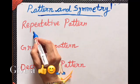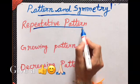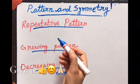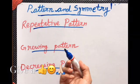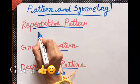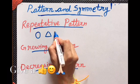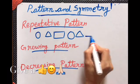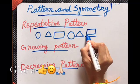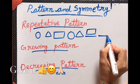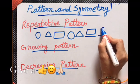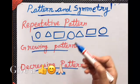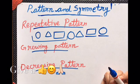Dear students, we have three types of patterns. One is repetitive pattern, growing pattern, and decreasing pattern. Repetitive in which some pattern is repeated again and again. Like circle, triangle, rectangle, then circle, triangle, then what will come? Rectangle. So these are the three basic patterns which we are going to repeat again and again.